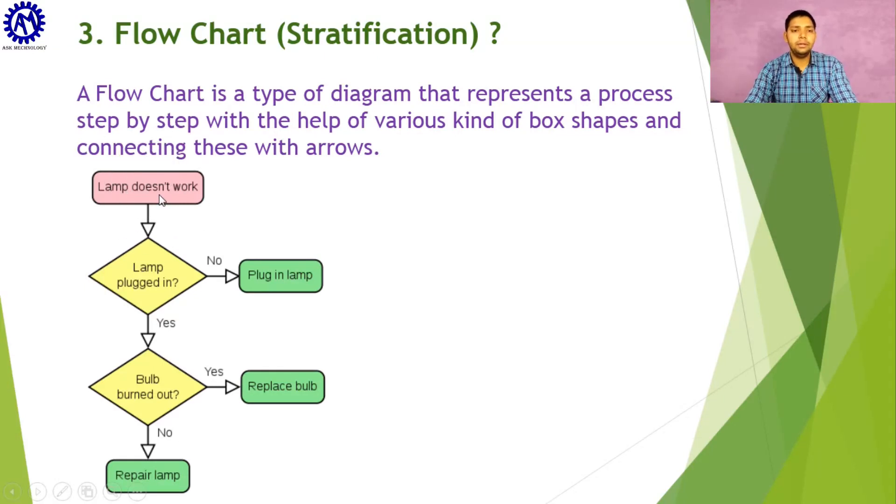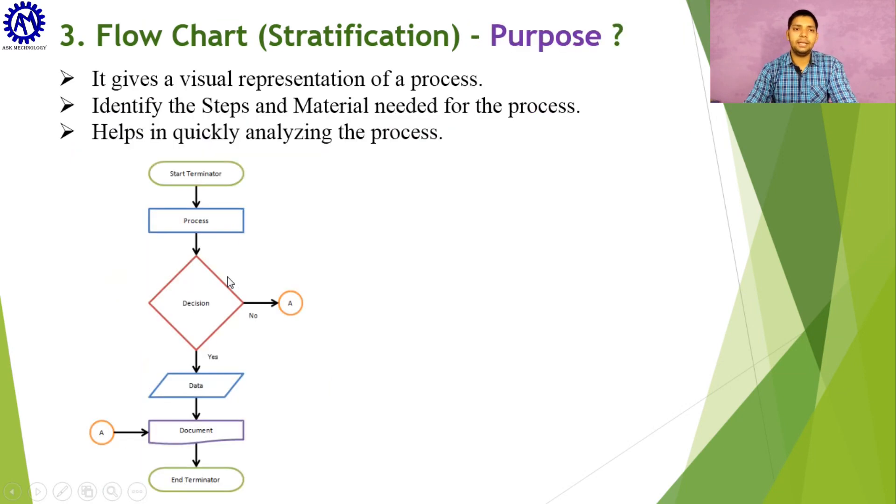For example, a problem occurs here: lamp does not work. A starting symbol is used here. After that we use a decision-making symbol in which we check if lamp is plugged in or not. If not, then we plug it in. If yes, again we use decision making and check if the bulb is fused or not. If yes, then we replace it, or if not, then we repair the lamp. Like this we use flowchart to show any process step by step. The purpose of flowchart is to give a virtual representation of the process, identify the steps and material needed, and help in quickly analyzing the process.